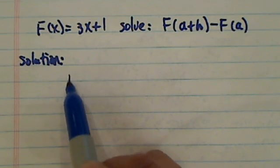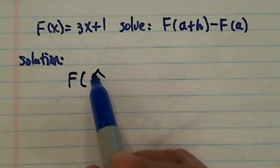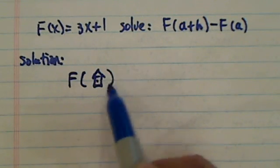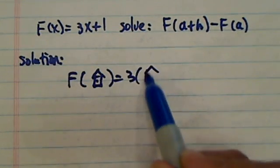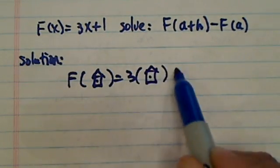To find a solution for this one, you need to realize that f of anything—this is a house—is equal to 3 times this, whatever is in there, house, plus 1.